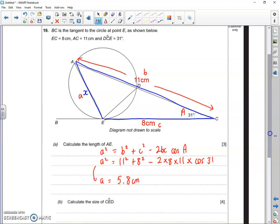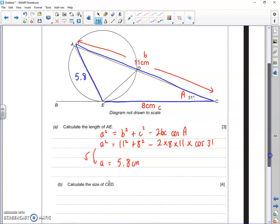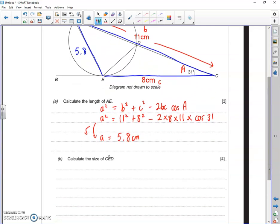Remember, you will have to square root at the end there to get from A squared to A. So I'll add that now to my diagram that that is 5.8 centimeters. And then the second part of the question, the very last question on this paper actually, calculate the size of C, E, D.